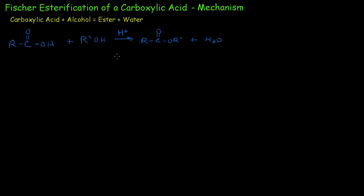Let's start off by examining what happens in this reaction. We're going to start off with our carboxylic acid — draw it out here. Don't forget to give your oxygen its valence electrons; it has a non-bonding pair here. And this is taking place in an acidic environment.